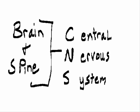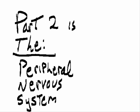What's the brain and spine? The central nervous system. And part two is the peripheral nervous system.